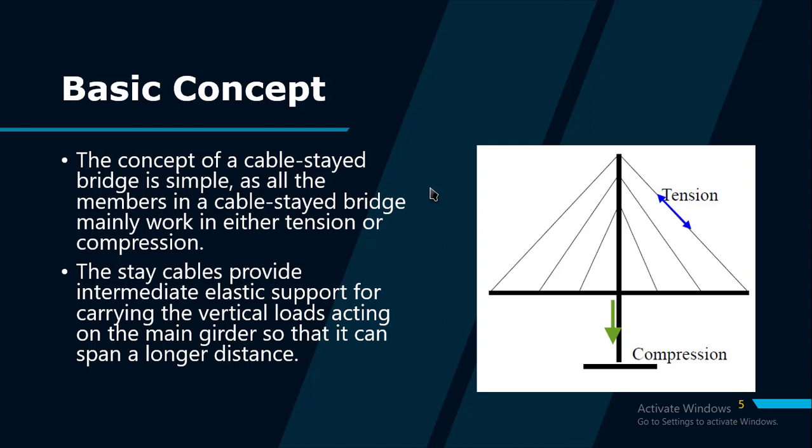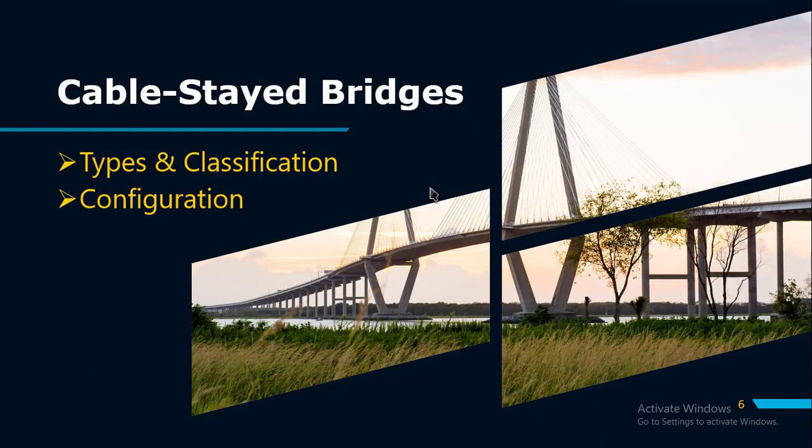The stay cables provide intermediate elastic support for carrying the vertical loads acting on the main girder, so that it can span a longer distance. To carry the loads applied on the bridge deck, the cables sustain tensile axial force, which results in compression force in both pylons and main girders, though bending moments and other forces are generally much smaller than axial forces. It is well known that axially loaded members are more efficient than flexural members, contributing to the structural efficiency and economy of cable-stayed bridges.